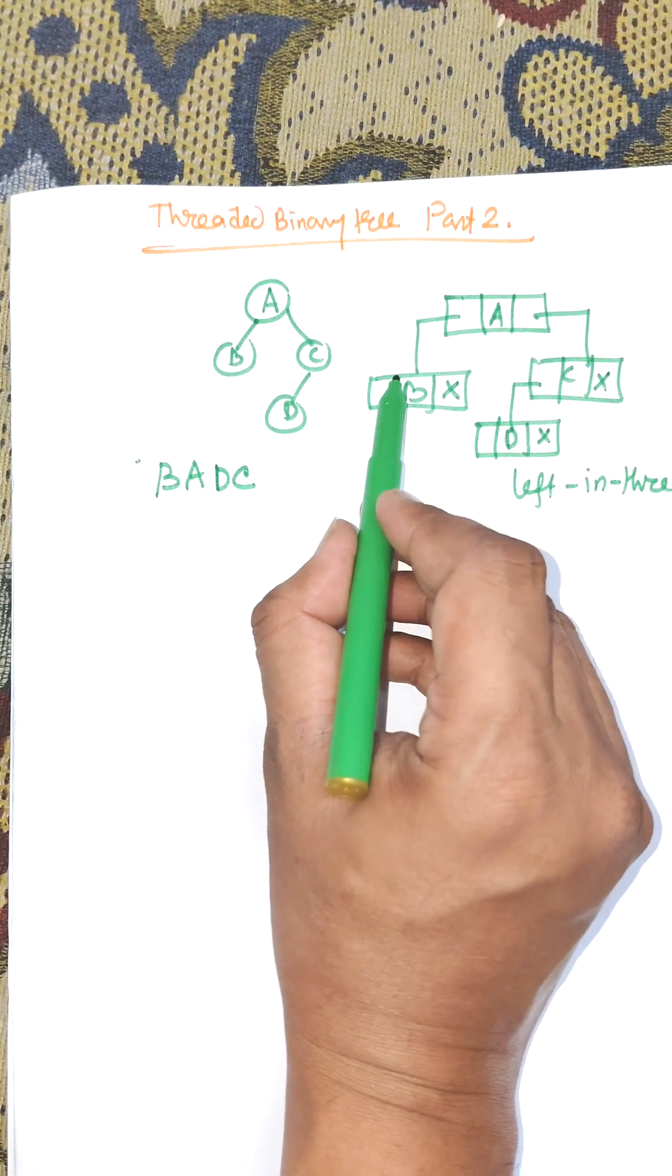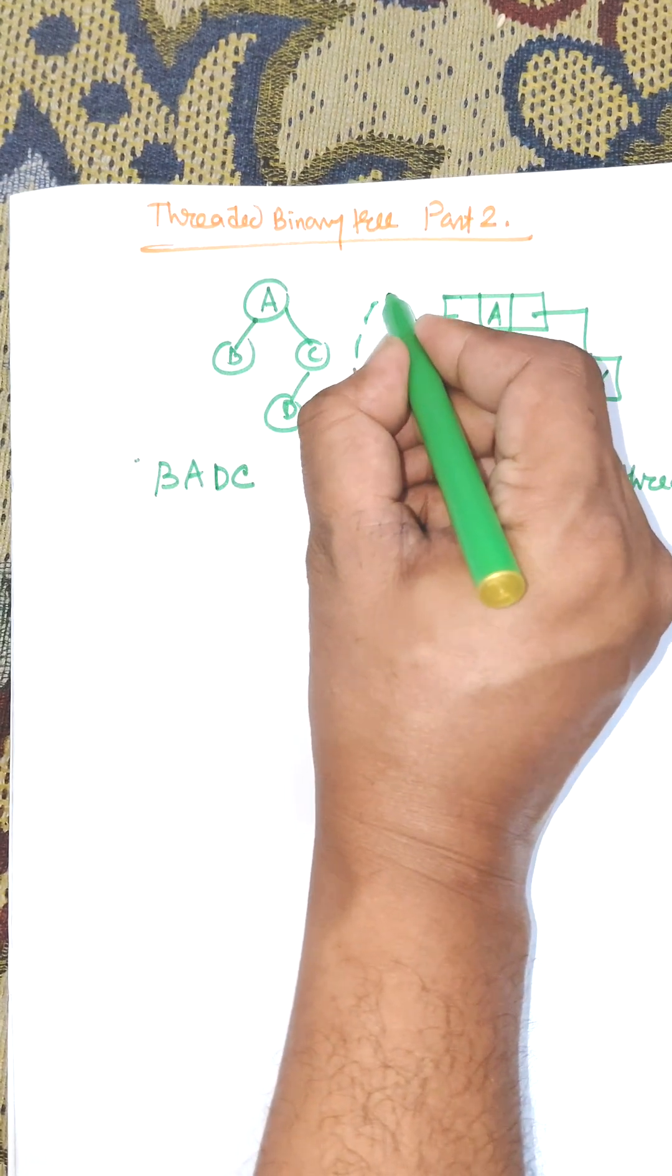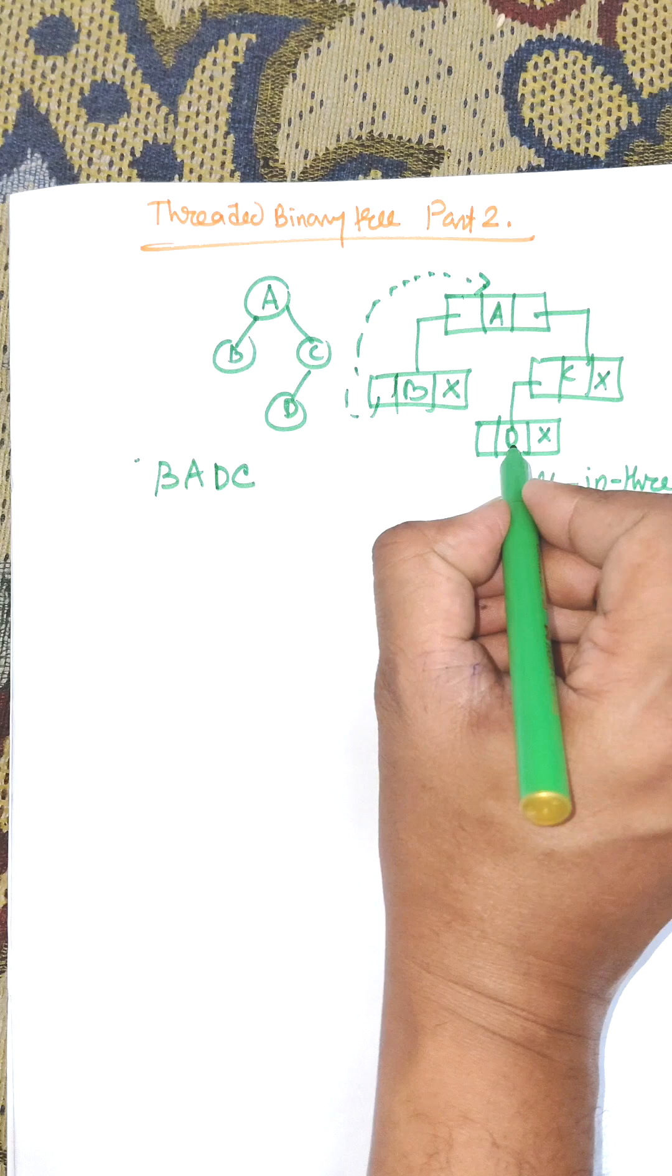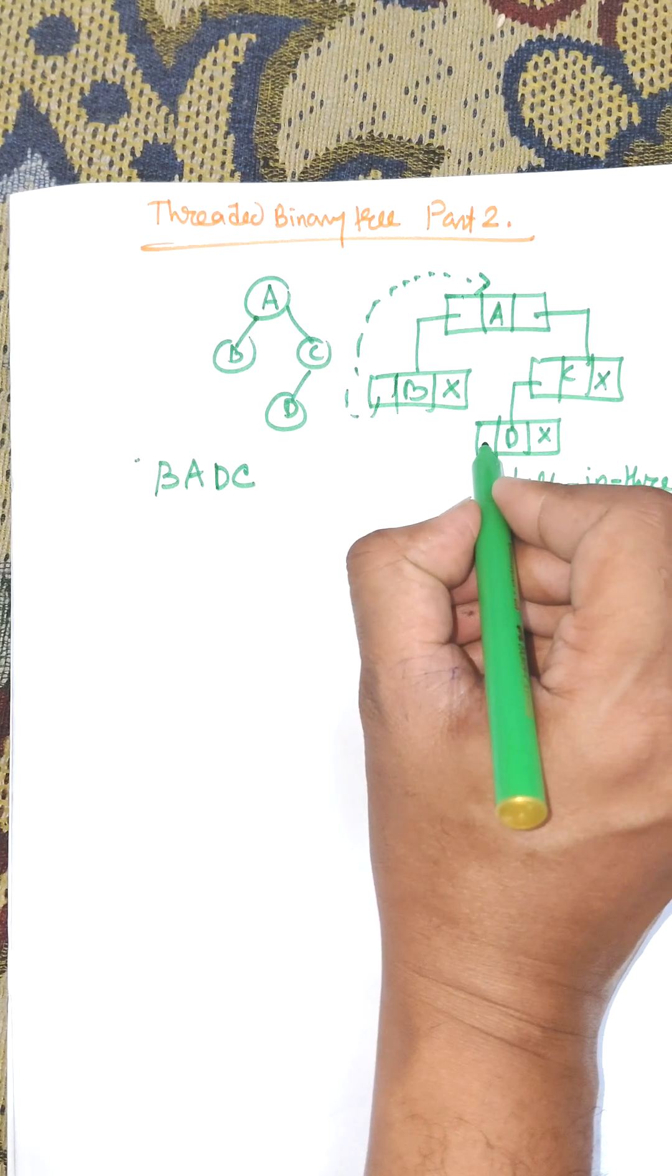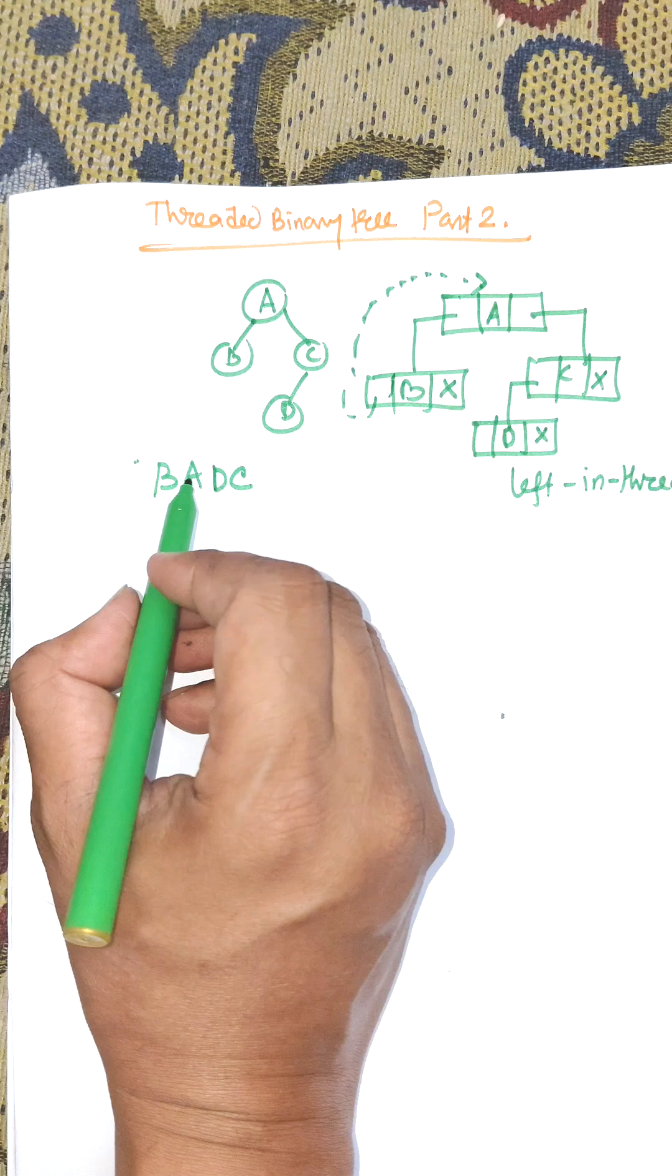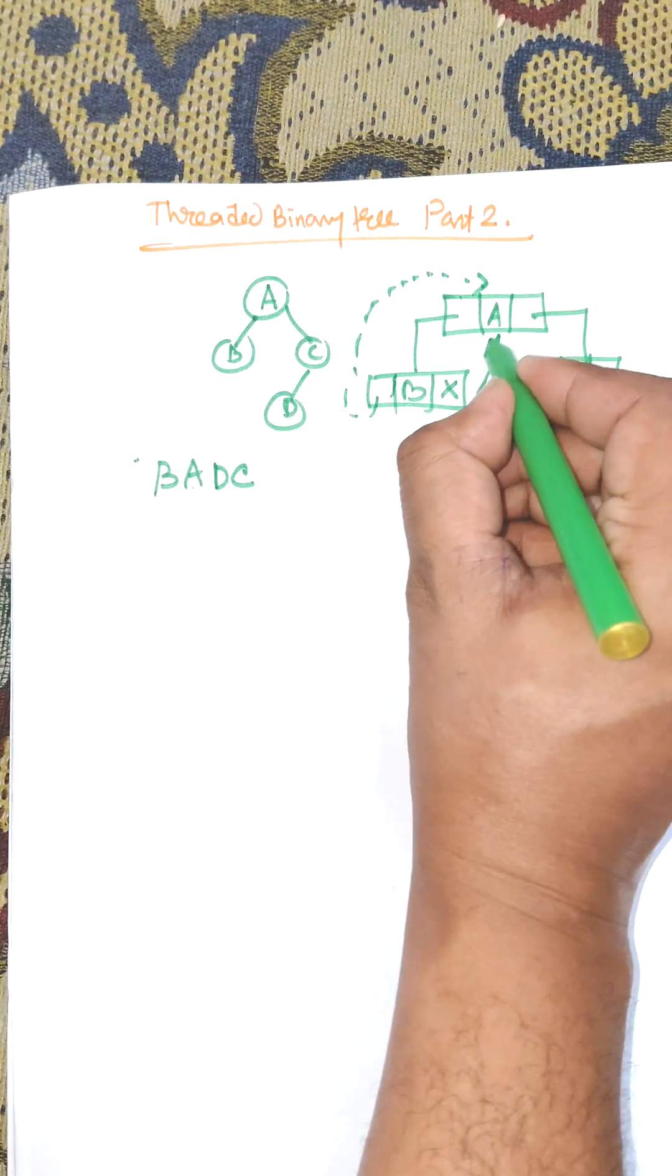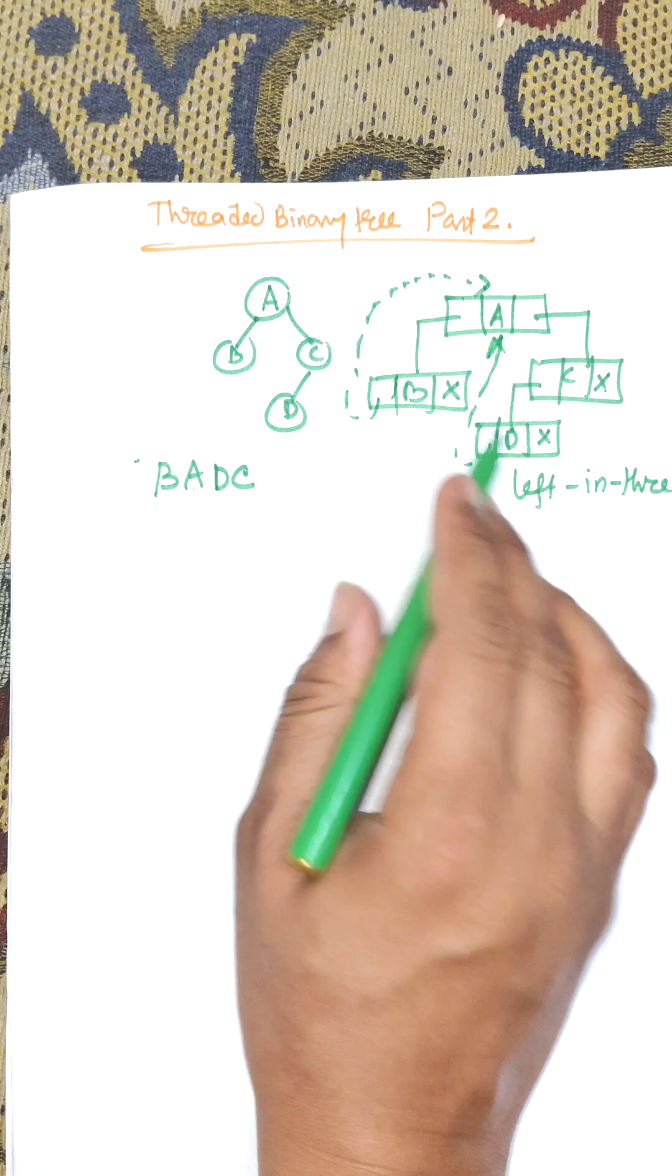The extreme left will point to the root node, creating a left thread. The left pointer of D points to the predecessor of D, which is A. This is known as left-in threaded.